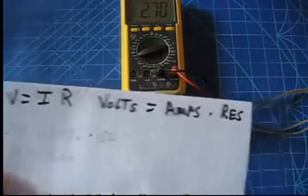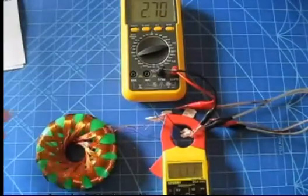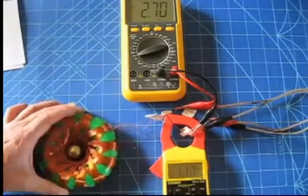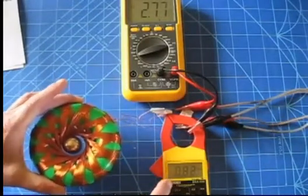Now let's see what happens when I put this in here. We've got 2.7 volts, 1.11 amps. Once I drop the ball in there and get it to spin, you can see that the amps drop.